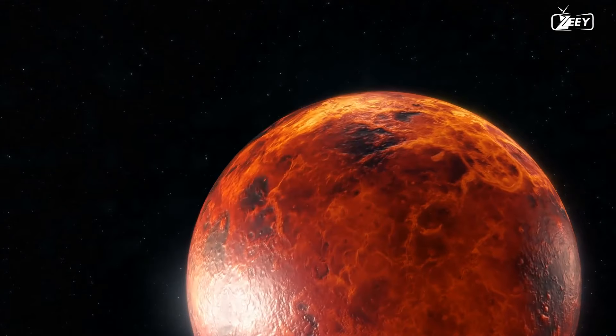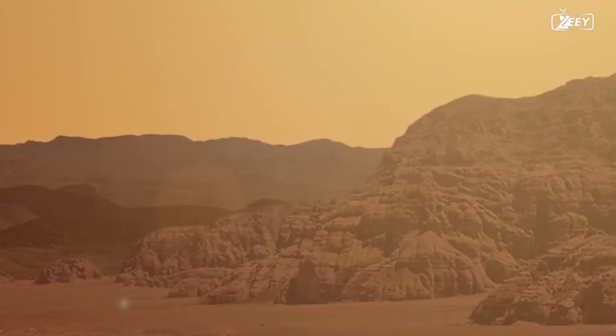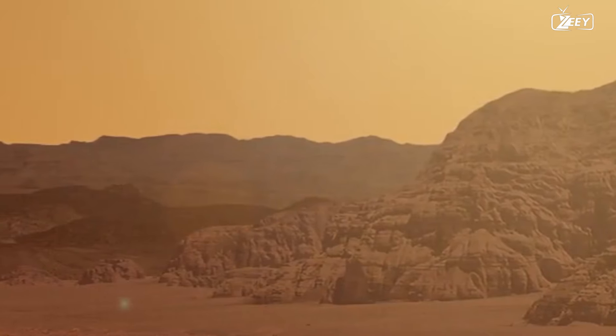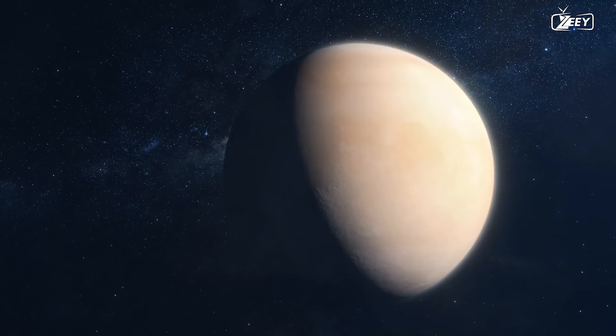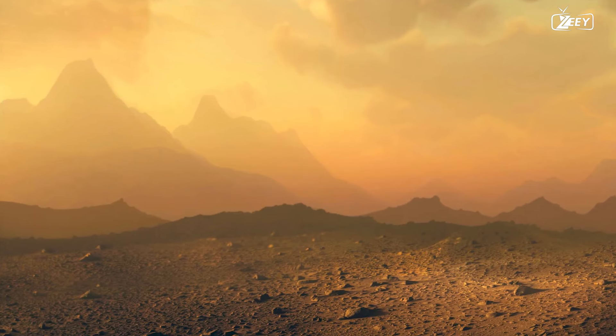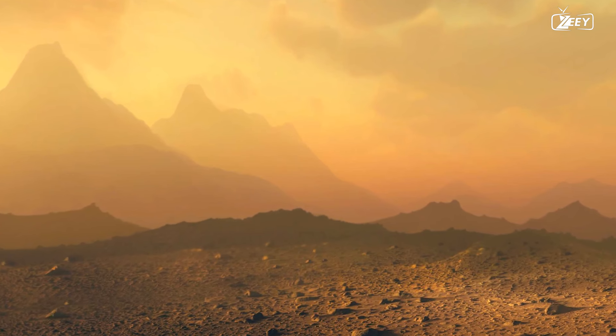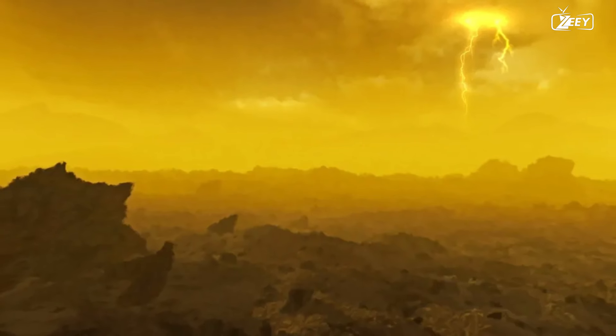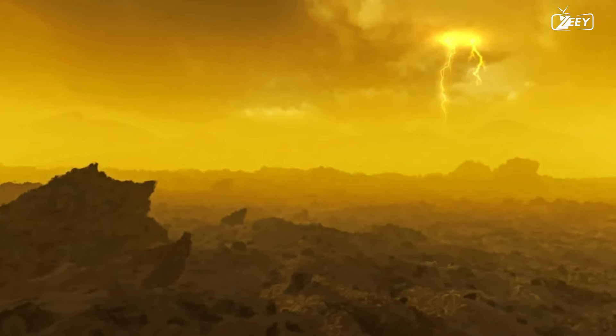Venus's atmosphere is another feature that has made it a hostile environment. Venus's atmosphere is approximately 100 times denser than Earth's, and it is mostly composed of carbon dioxide. This means that the air pressure on Venus's surface is extremely high, making landing on the planet's surface problematic for any spacecraft. Venus's thick atmosphere also prevents heat from escaping back into space, which contributes to the planet's high surface temperature. Venus's heavy clouds also prevent most sunlight from reaching the planet's surface, resulting in a gloomy atmosphere with little or no sunshine.